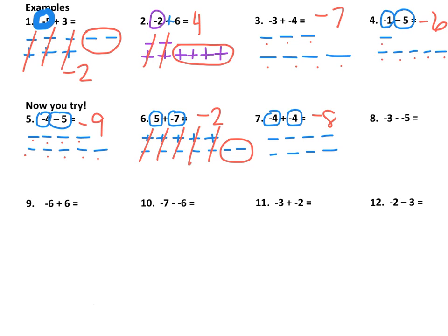We'll do one more example here. In this problem, the first thing I notice is we have two negatives in a row, so we have to make that a plus. The first number is negative 3, and the next number is positive 5. These cancel, cancel, cancel, and we end up with positive 2. Those are some examples of how to add and subtract integers using counters.